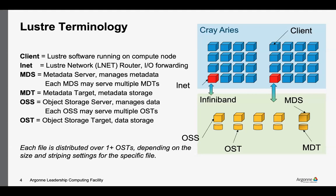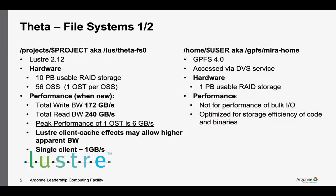When a file lands on disk, it lands on one or more object storage targets, and we'll get into that in a slide or two. The first two file systems on this page: on the left-hand side is ThetaFS0, also known as slash projects, running Lustre 2.12.